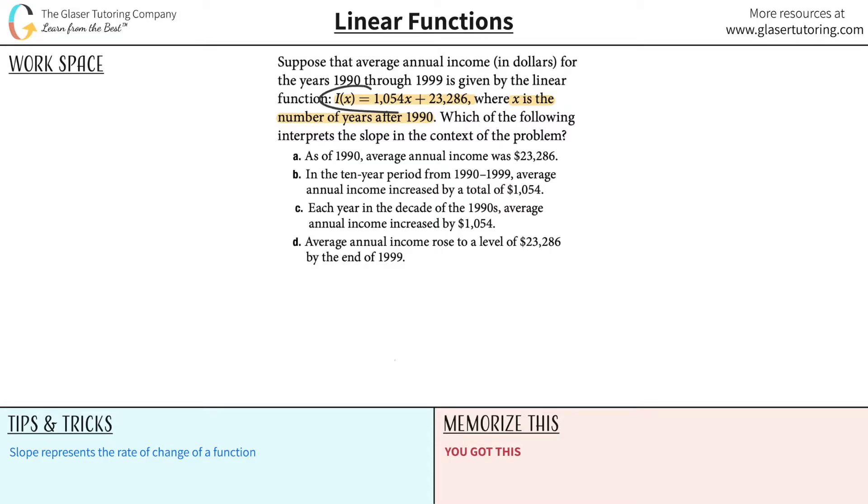Let's take a quick glance at the equation. It says I of x, and what does I indicate? Well, I of x is the average annual income. So this represents the average annual income.